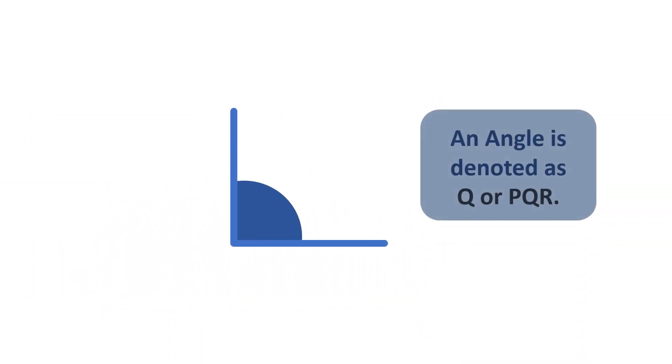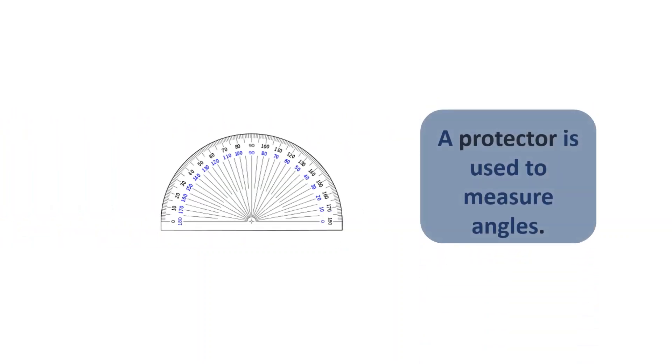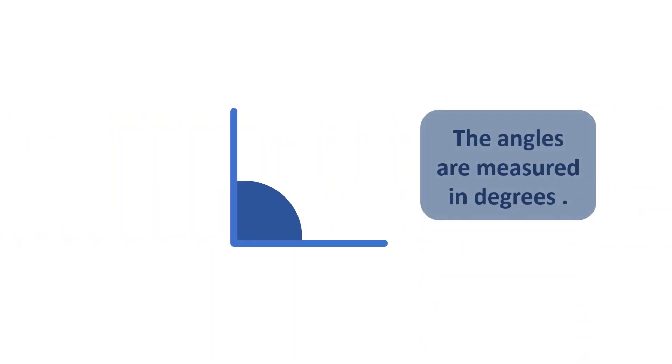An angle is denoted as Q or PQR. A protractor is used to measure angles. The angles are measured in degrees.